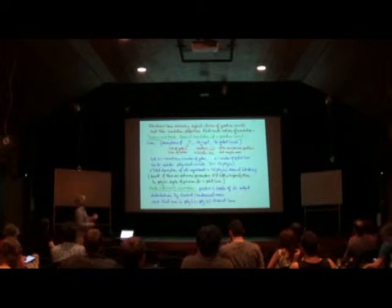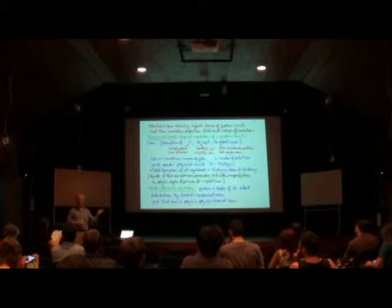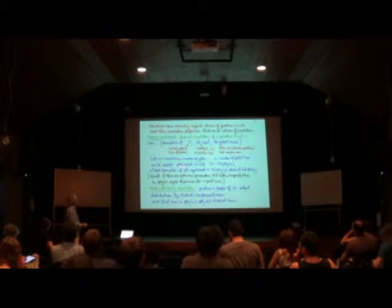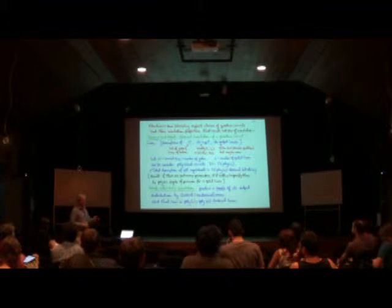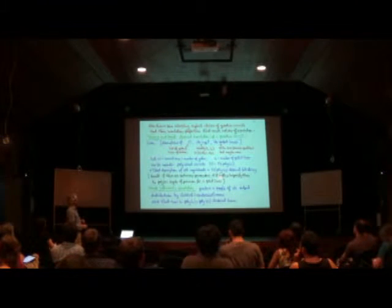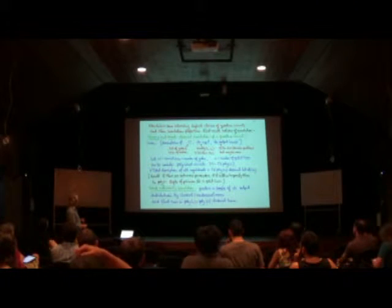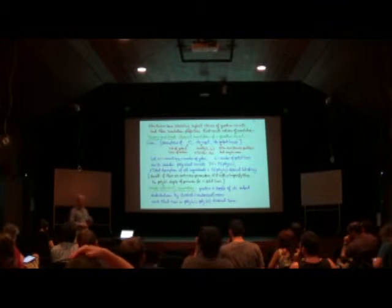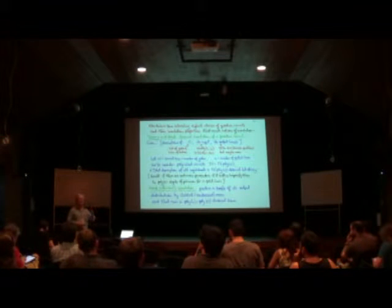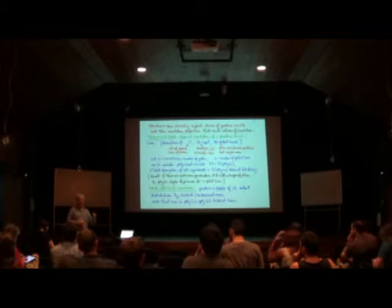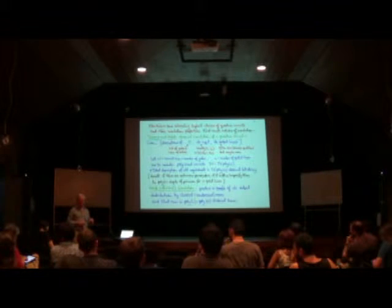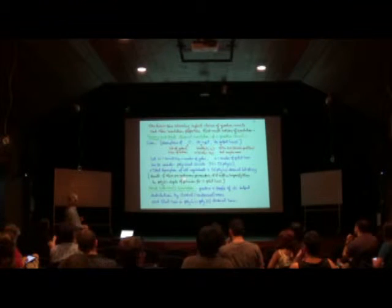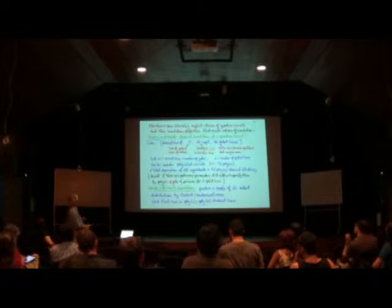Suppose we have a finite universal set of gates. If there are continuous parameters, it will always suffice to specify them to poly(n) digits for n-qubit lines. Notice this is exponential precision — if you have a number to n digits, the last digit is 10 to the minus n — but it only takes polynomial effort to write it down, so that's fine.